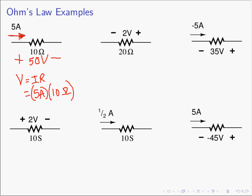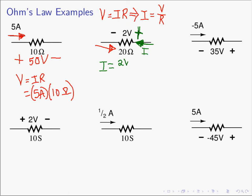In the next example, we have a 20 ohm resistor with a voltage of 2 volts across it. The question is: what is the current moving to the right? Rearranging Ohm's Law, I equals V over R. With the passive sign convention, the current flows into the positive terminal, so the green current I equals 2 volts divided by 20 ohms, giving 1/10 ampere flowing to the left. The red current I′, which flows in the opposite direction, must therefore be negative 1/10 ampere.